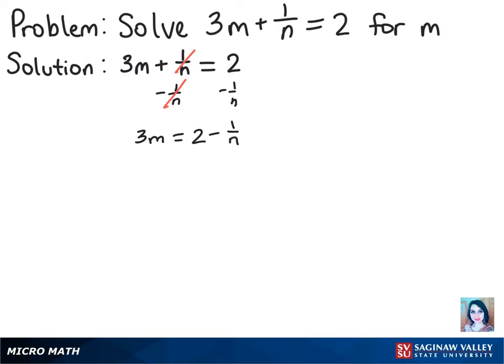And now we still want m by itself, so we're going to divide both sides by 3, and that will get us m equals 2 minus 1 over n all over 3.